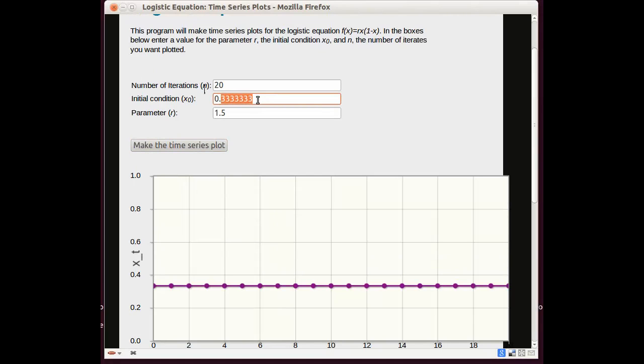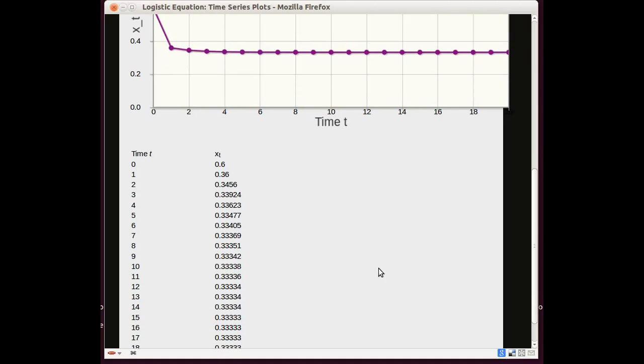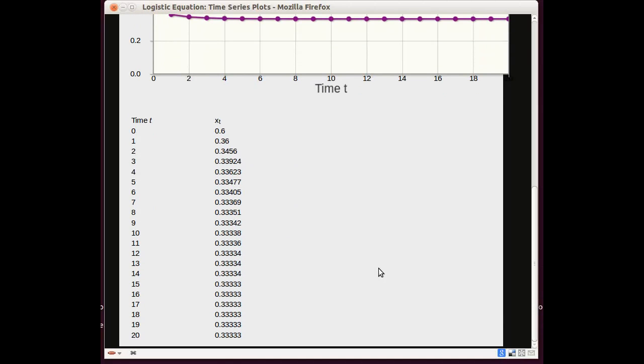Let's try another value. What if we try 0.6? Remember this would be 60% of the way to the annihilation population. And we see that the population decreases and approaches the same fixed point at 0.333. This is the time series plot. And here are the raw numbers that the plot is made from.